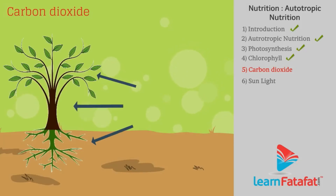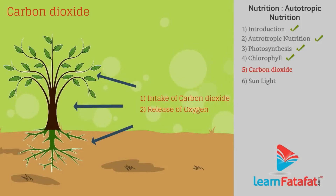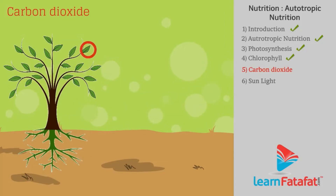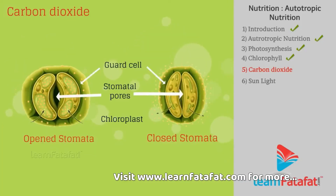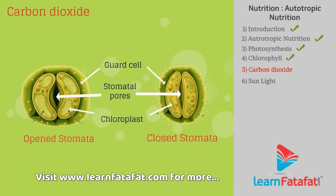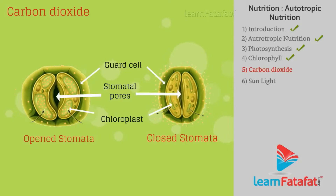Carbon dioxide: Exchange of gases, i.e., intake of carbon dioxide and removal of oxygen, can occur at the surface of the stem, roots, and leaves. Tiny pores present on the surface of leaves called stomata are responsible for gaseous exchange. Large amounts of water can also be lost through these stomata, hence guard cells facilitate the opening and closing of stomatal pores whenever needed.